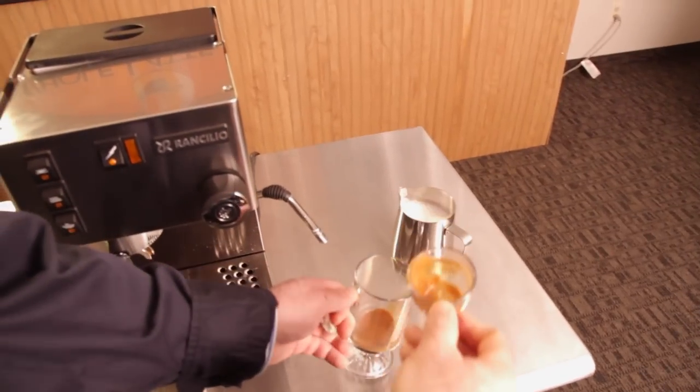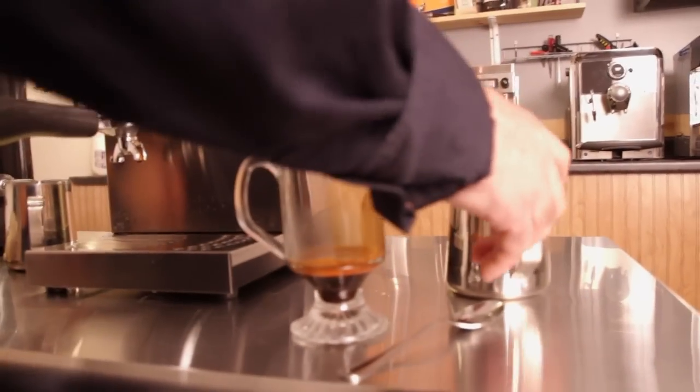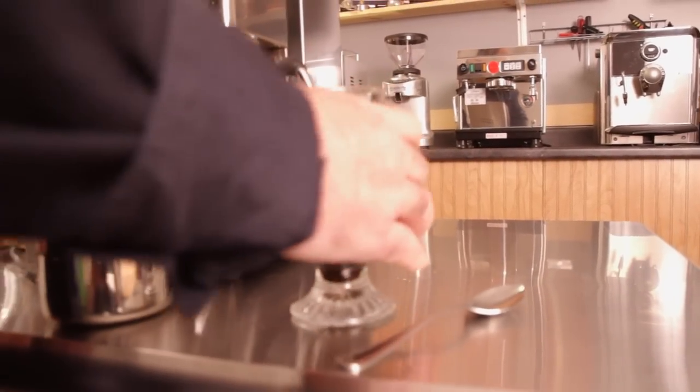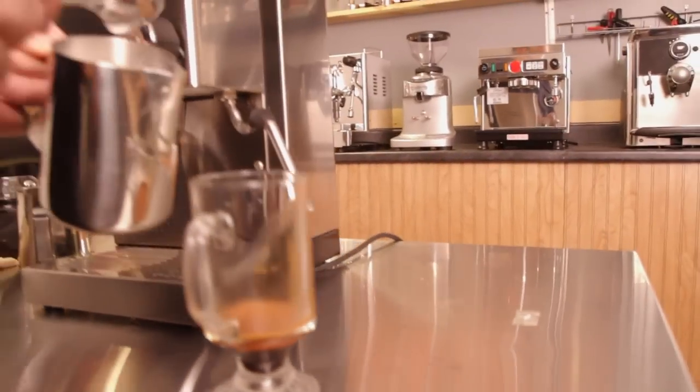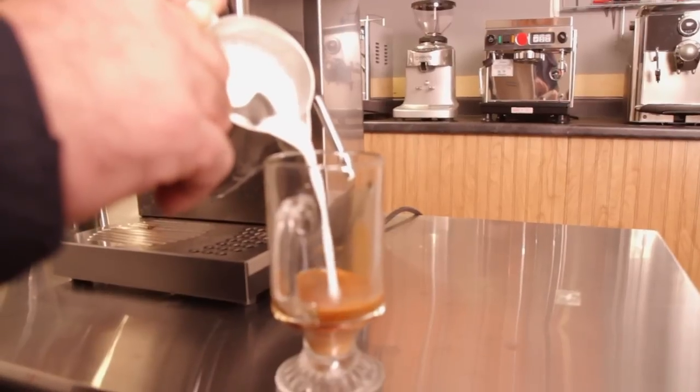Now one thing about a cappuccino, what you actually want to do is you'd like to have a third, a third, and a third. You want to have approximately a third of espresso, then one third steamed milk and one third foam milk. The purpose of the spoon is I want to hold back that foam that I worked so hard to create. So I'm going to pour in my steamed milk.